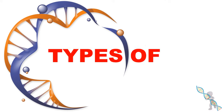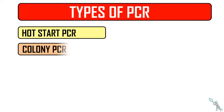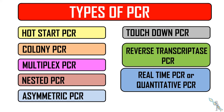Hello everyone. In this video I will discuss various types of PCR, that is polymerase chain reaction. Without any delay, let's start the video. The types of PCR I'm going to discuss are hot start PCR, colony PCR, multiplex, nested, asymmetric, touchdown PCR, reverse transcriptase PCR, and real-time PCR. Be with me till the end and you will learn a lot about these different types.